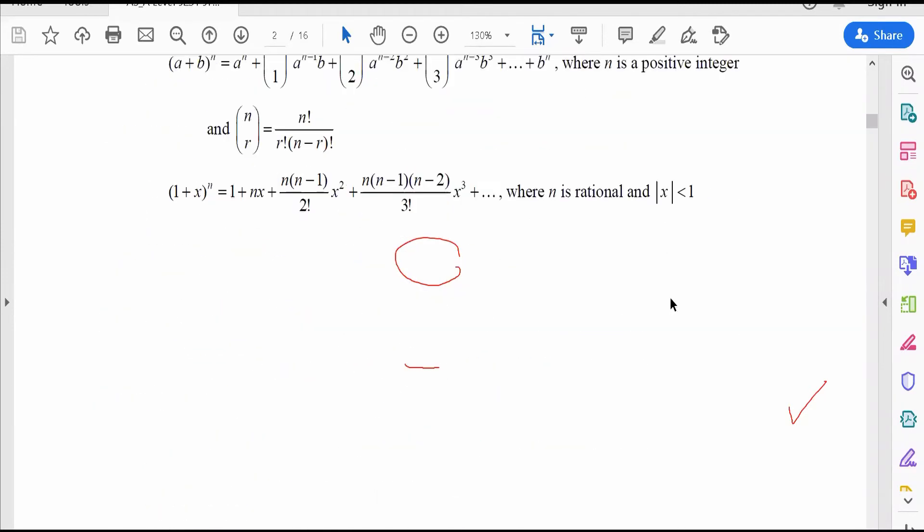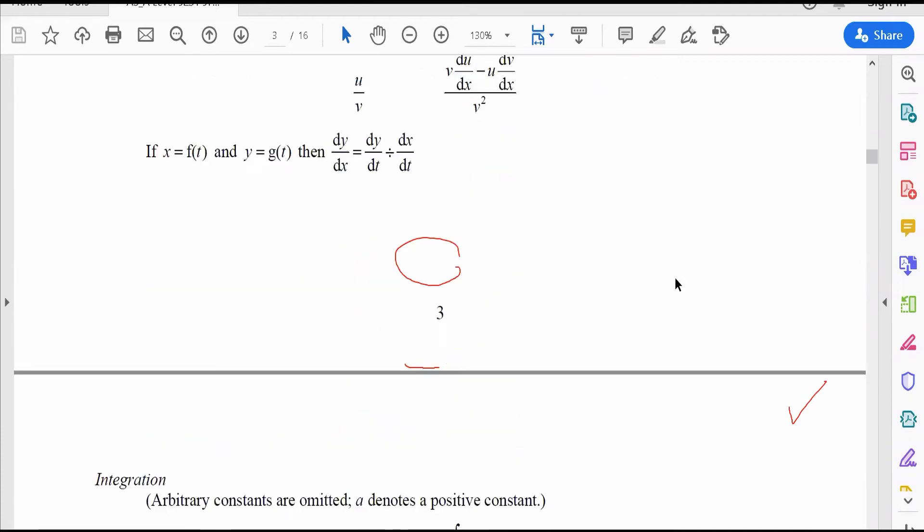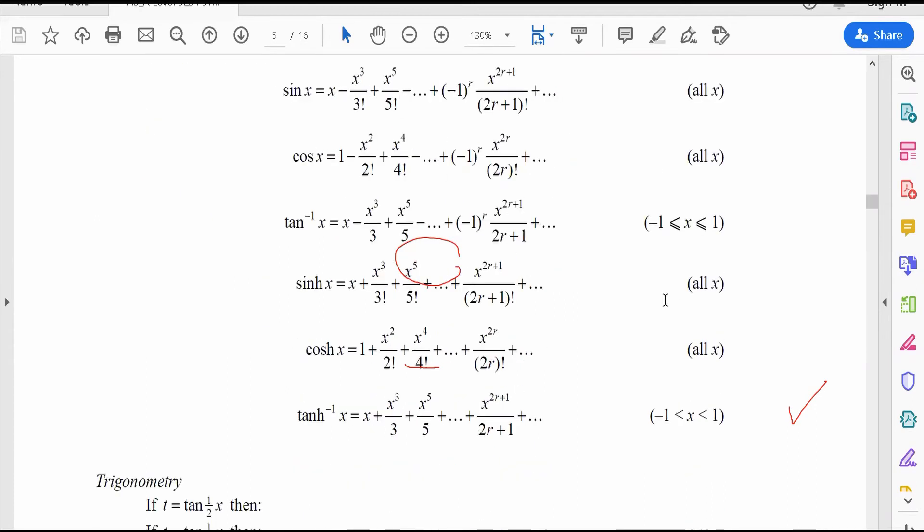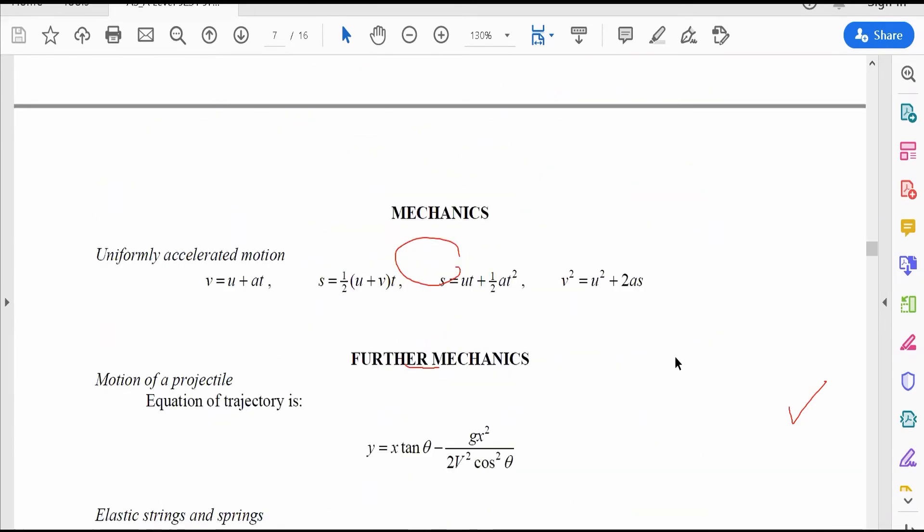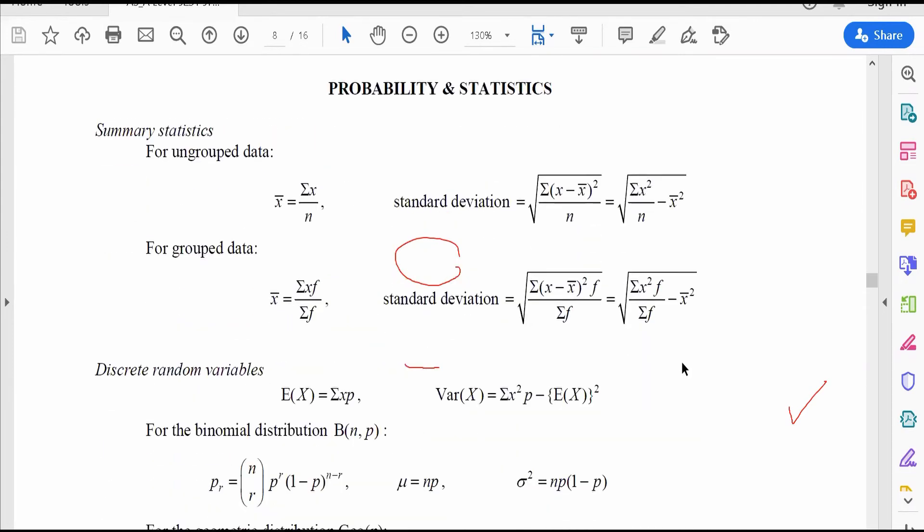We quickly look for the formula for statistic and probability. So this is where we get the formula for the statistic and probability. Now, for ungrouped data, to find mean, we have this formula. To find standard deviations, we have this or this.